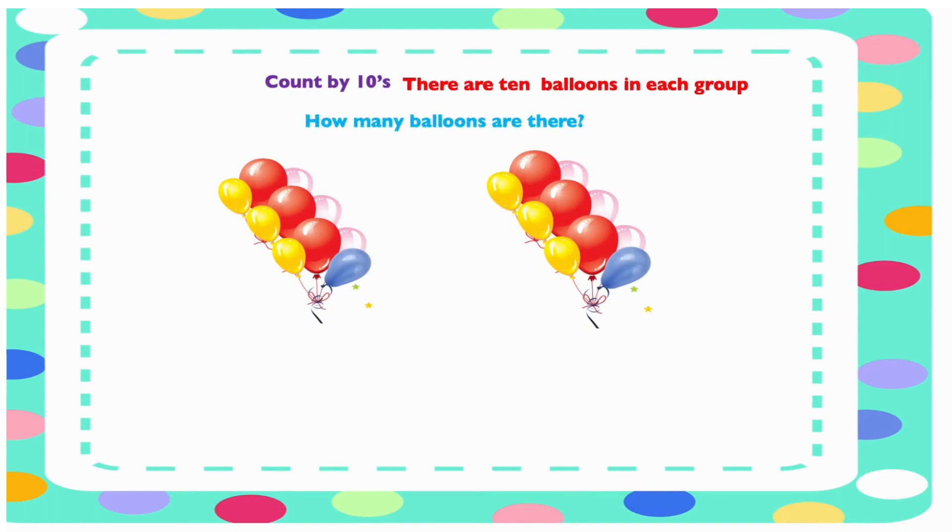How many balloons are there in the picture? Remember that each group contains 10 balloons and we are counting in tens. Let's find out how many there are all together. 10, 20. So we have 20 balloons all together.